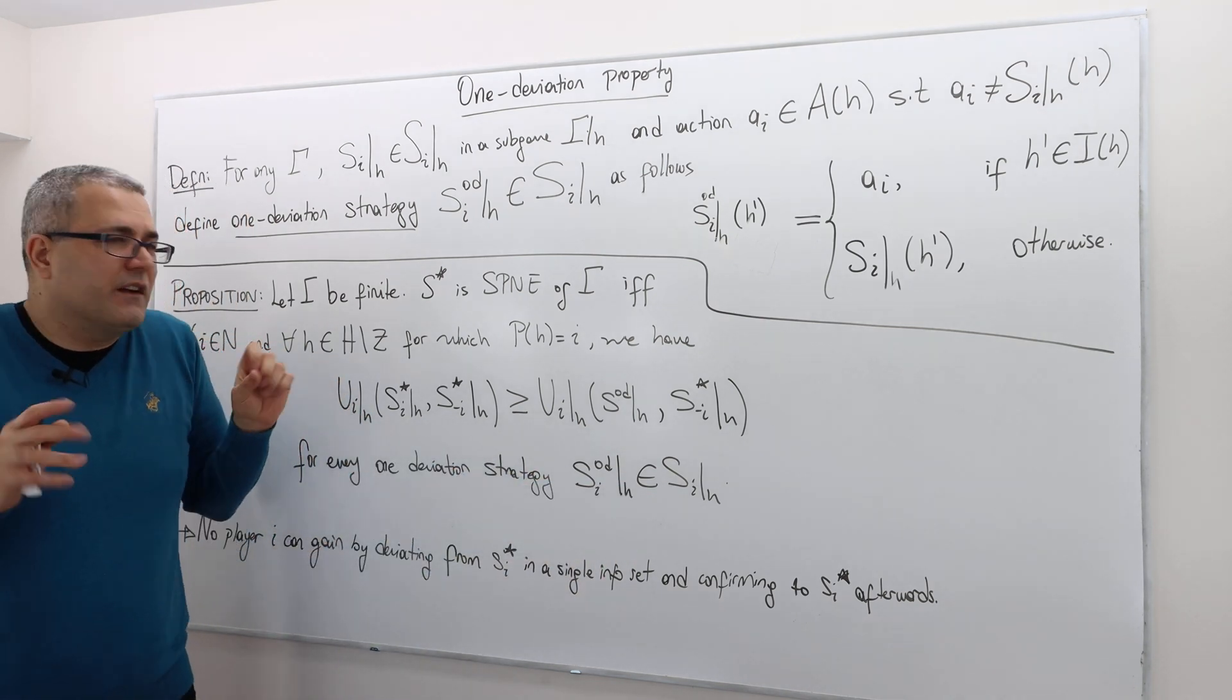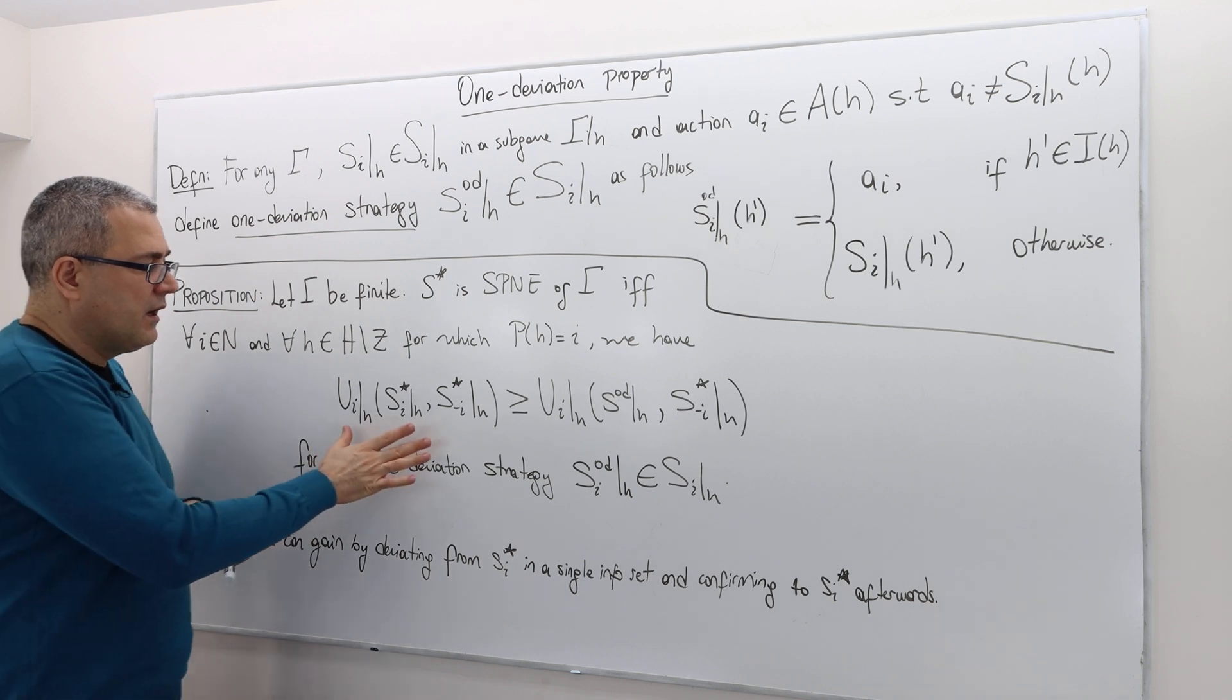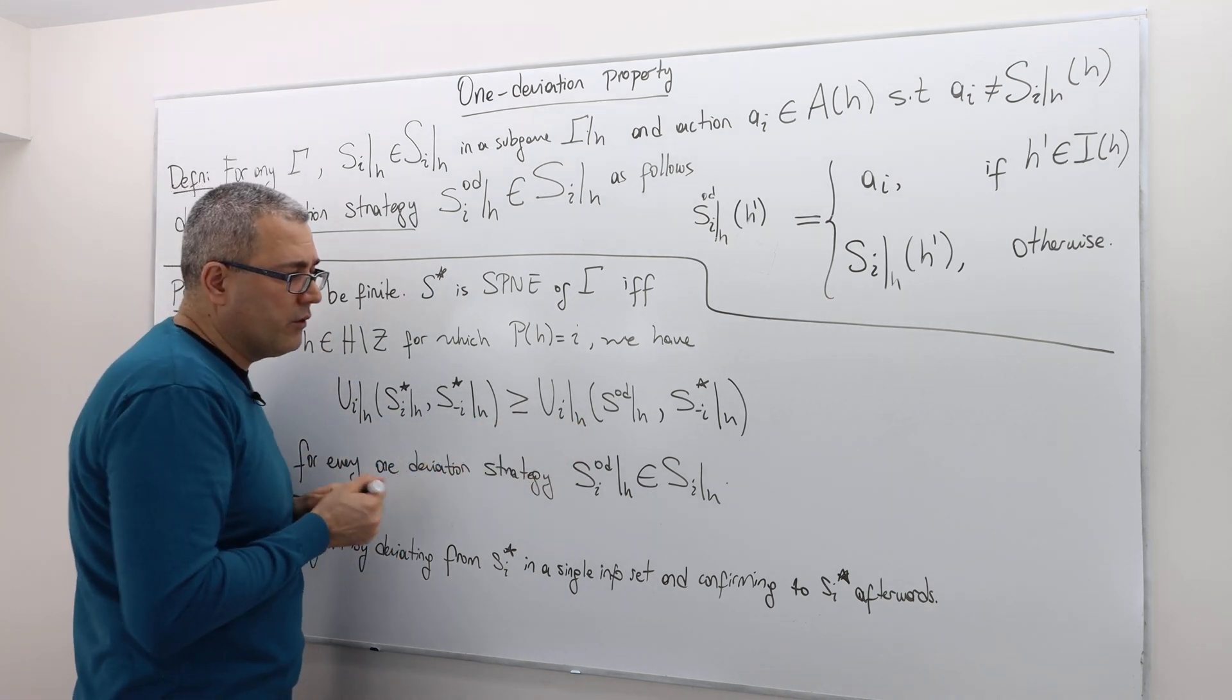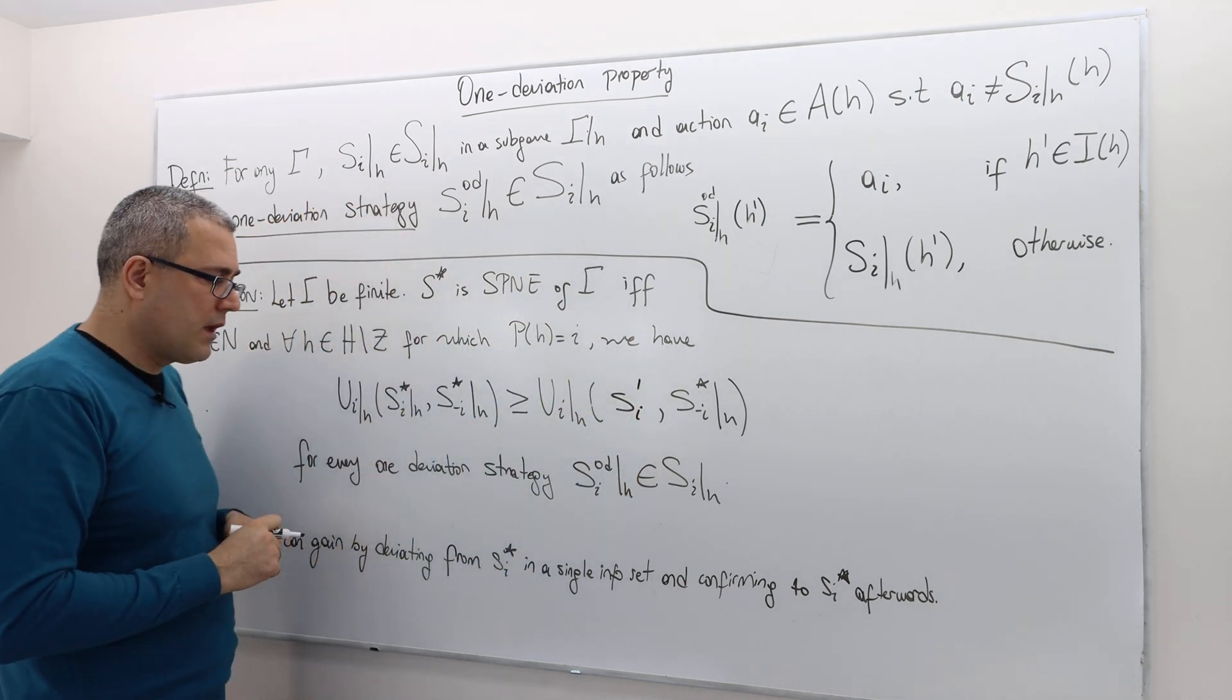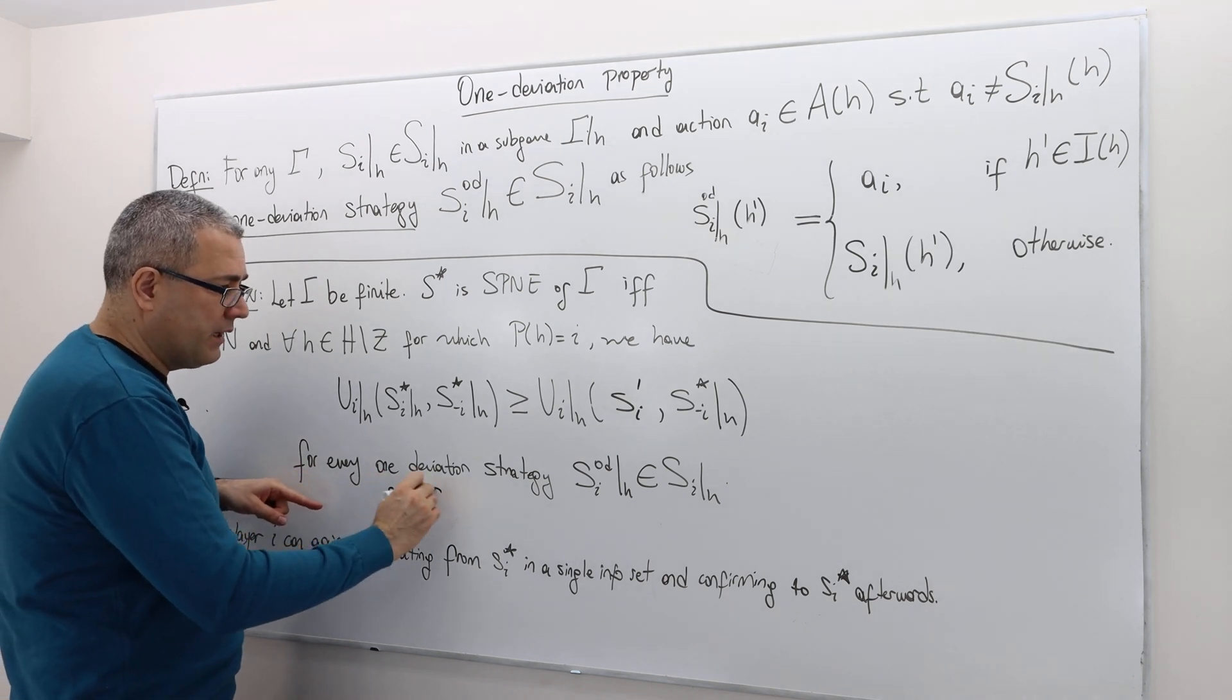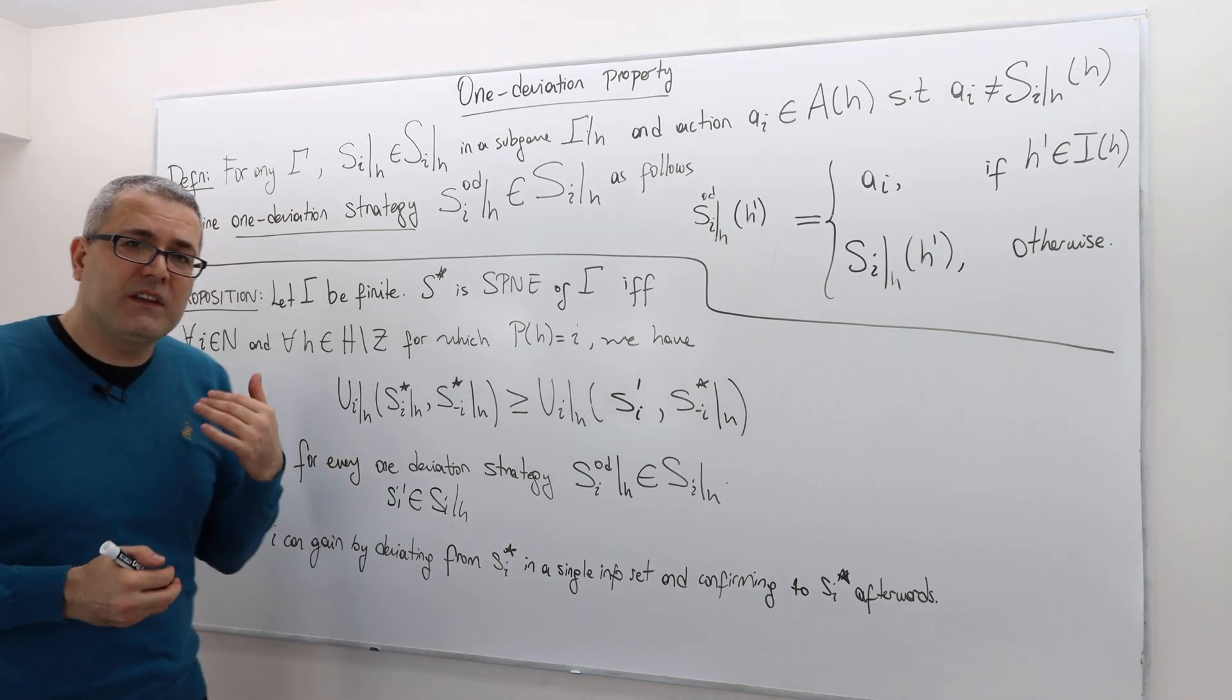So why is this different than sub game perfect Nash equilibrium? Well, the sub game perfect Nash equilibrium says, if you go back to the definition, this payoff must be greater than or equal to sum SI prime for every SI prime in SI slash H. However, what we do, so basically it says,